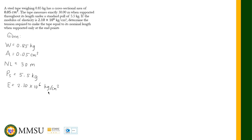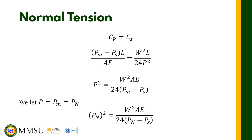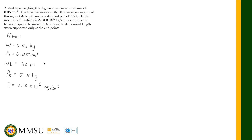Now we need to determine the normal tension. We are going to use the formula from our previous slide. The formula is: P sub N squared equals W squared times A times E, all divided by 24 times the quantity P sub N minus P sub S. Let us write that here: P sub N squared equals W squared times A times E, divided by 24 times (P sub N minus P sub S).